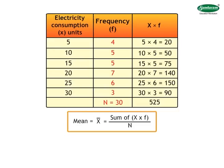5 units were used on 4 days. Third column, we take as X into F. Similarly, we calculate the entire X into F and find N which is total of all frequencies column. Then, we find the total of X into F column. Using the given formula, we calculate the mean as X bar is equal to sum of X into F upon N. We get X bar is equal to 525 upon 30 is equal to 17.5 units.